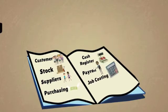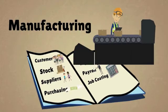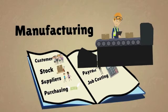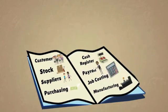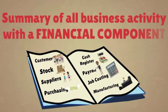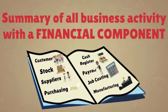And finally, when you make goods, that goes into the manufacturing subledger. At the end of each day, the company accountant takes figures from all our separate subledgers and combines them in a summary. This summary of all activity with a financial component creates your general ledger.